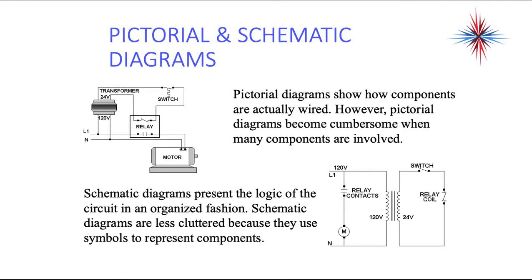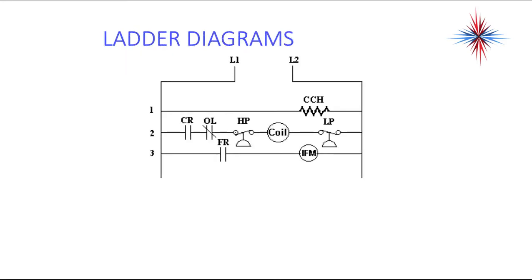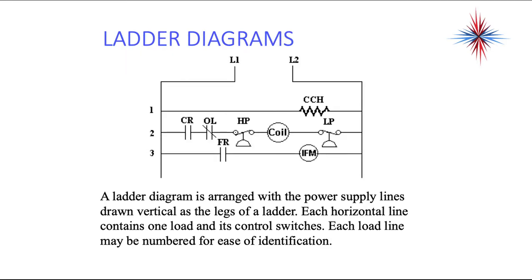Ladder diagrams have a tendency to look like a ladder. A ladder diagram is arranged with power supply lines drawn vertically as the legs of a ladder. Each horizontal line contains one load and its control switches. Each load line may be numbered for ease of identification, but is not always numbered. A lot of manufacturers do not put numbers on the side here.